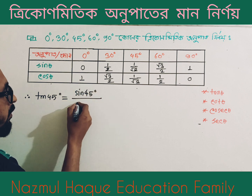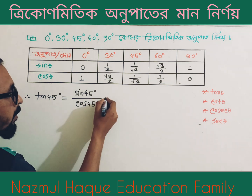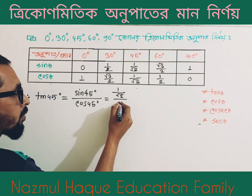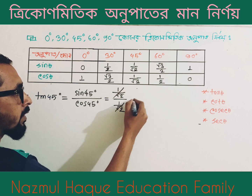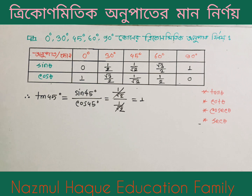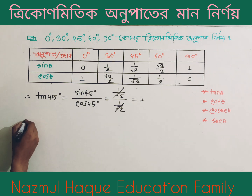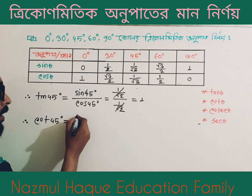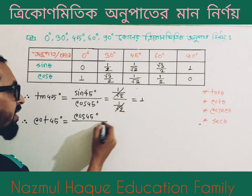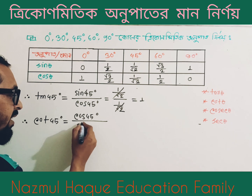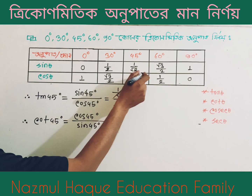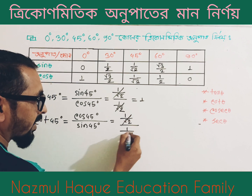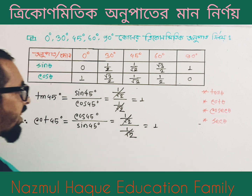So for 45 degrees: cos 45 degree. Tan 45 degree equals 1. Cos 45 degree is 1 divided by root 2. Sin 45 degree is 1 divided by root 2. So tan 45 degree equals 1 divided by root 2 over 1 divided by root 2, which equals 1.